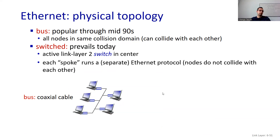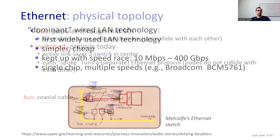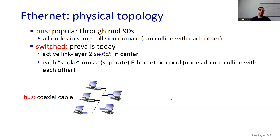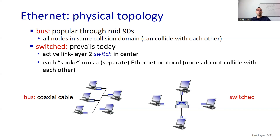Nowadays, we have switched layer 2 devices. In the old bus scenario, turning on Wireshark lets you listen to all communication of all nodes. But now with switches, we don't broadcast anymore — each spoke runs a separate Ethernet protocol and those do not collide with each other. In the switch scenario, we are all connected to the switch, which is connected to a router. The switch knows that the MAC address of a device belongs to a specific port, so it only transmits through that port and doesn't send data to unrelated nodes.